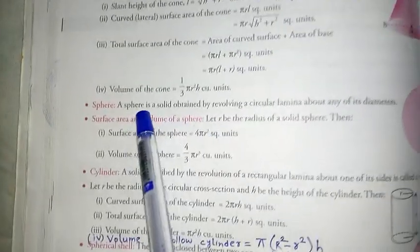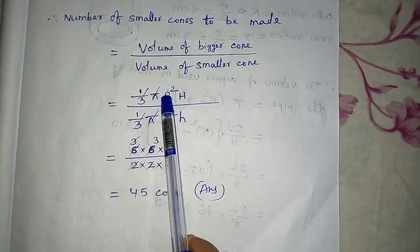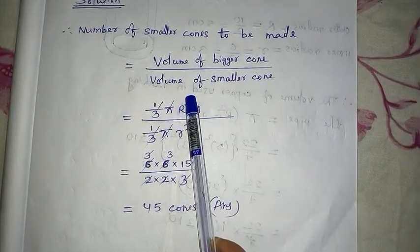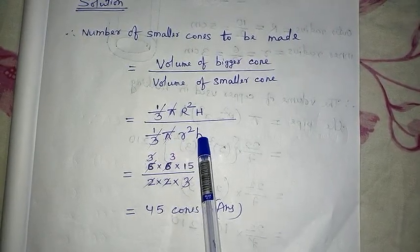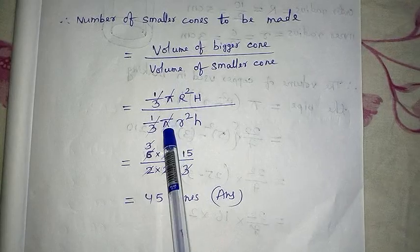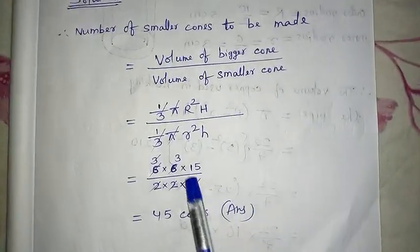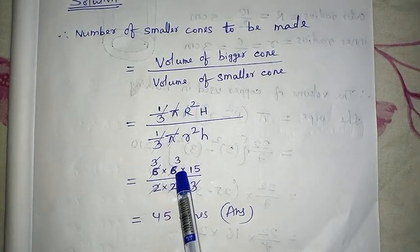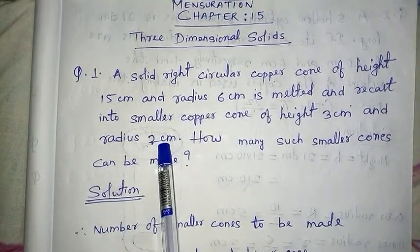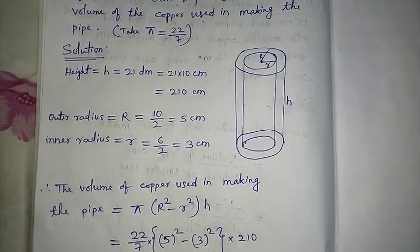Volume of larger cone = (1/3)πR²H = (1/3)π × 6 × 6 × 15. Volume of smaller cone = (1/3)πr²h = (1/3)π × 2 × 2 × 3. Dividing these: (6 × 6 × 15) ÷ (2 × 2 × 3) = 540 ÷ 12 = 45. So 45 smaller cones can be made when the larger cone is melted.